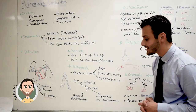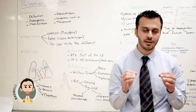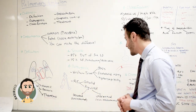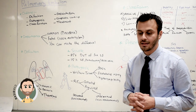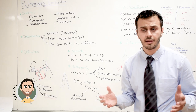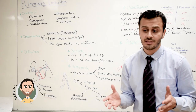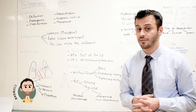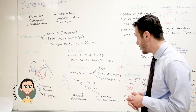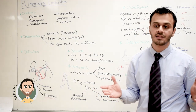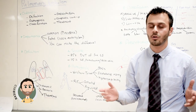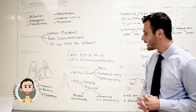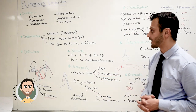What I mean by unprovoked is that there is no strong risk factor you can identify that could have precipitated the clot formation. This could be idiopathic — meaning there is no prominent reason you could identify — or it could be risk factors you cannot control, such as male sex or old age.